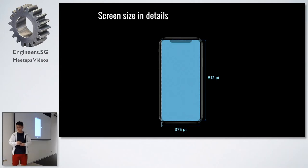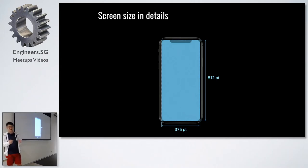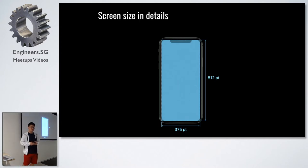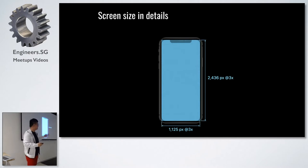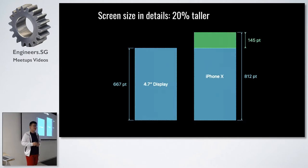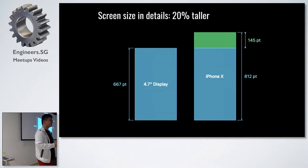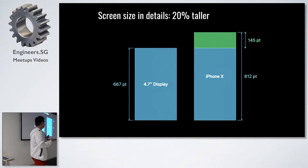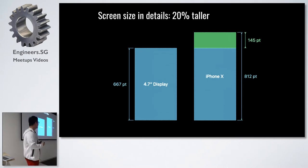Taking a closer look at the screen: it is 375 points wide and 812 points in height. If rendered in 3x, it will be this number of pixels. Compared to the 4.7-inch iPhone, it is 145 points taller — around 20% taller. With the design for iPhone X, you can definitely put more content in one scroll.